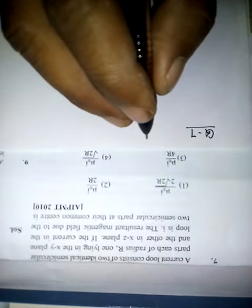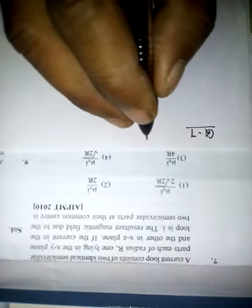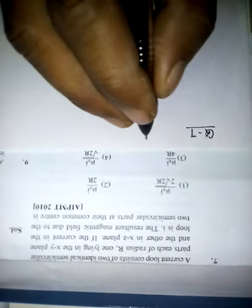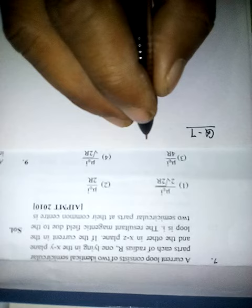Question number 7. Current loops exist on two identical semicircular parts, each of radius R, one lying in the xy plane and the other lying in the xz plane.